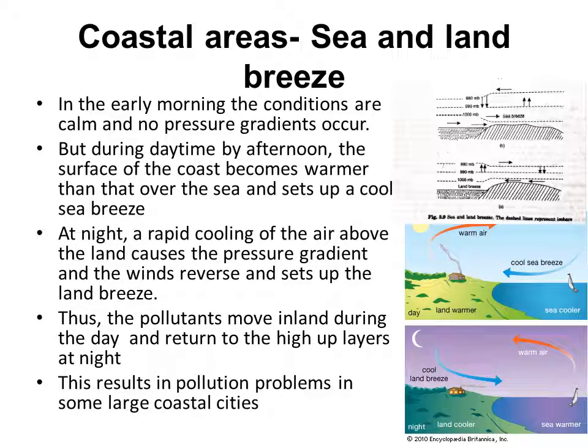Let's see the effect of sea and land breeze on coastal areas. In the early morning, conditions near the coast are calm and no pressure gradients are developed. But during daytime, by afternoon, the surface of the coast becomes warmer than over the sea, and this sets up a cool sea breeze. As the surface of the coast becomes warmer, it warms the air very close to the surface, and the warm air lifts to the upper layers of the atmosphere.